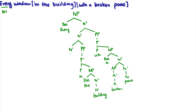And then finally, 'window' is just the head noun of the entire noun phrase: 'every window in the building with a broken pane.' So here we demonstrate double adjuncts. 'With a broken pane' is daughter of an N-bar, sister of an N-bar. And 'in the building' is once again daughter of an N-bar, sister of an N-bar. We have to do 'with a broken pane' first to get the correct word order. So that's the first example.